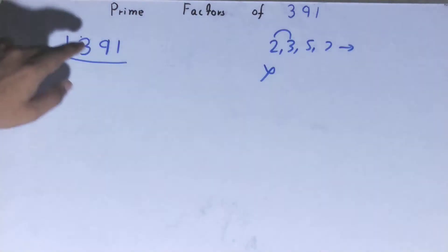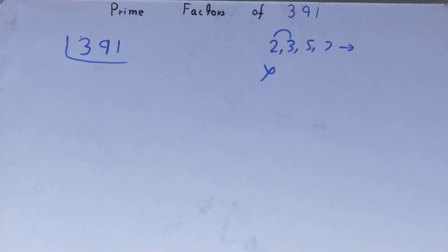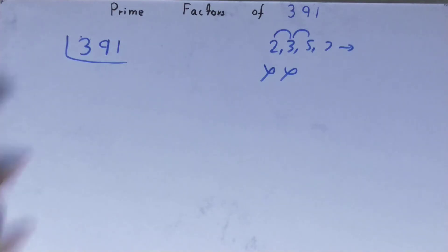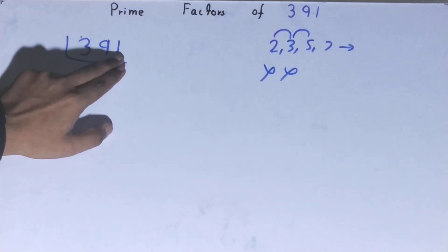So we will go to the next lowest prime number, that is 5. The last digit is neither 5 nor 0, so it is not divisible by 5. So we will go to the next lowest prime number, that is 7. No, it is not divisible by 7 also.